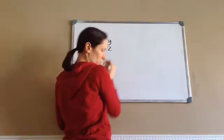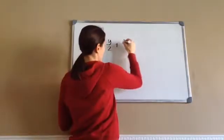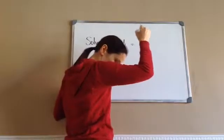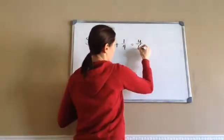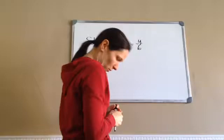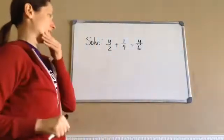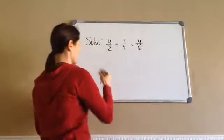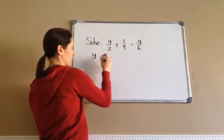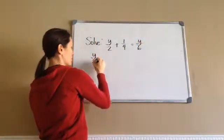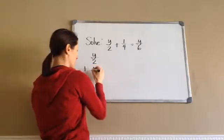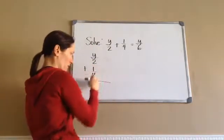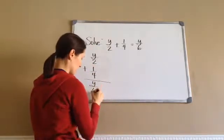And then this is the equation. Y over 2 plus 1 fourth equals Y over 6. Now, we're trying to come up with what Y is, but before we do that, I'm going to write it vertically, which we've done something similar to this, but we didn't have an equals to.